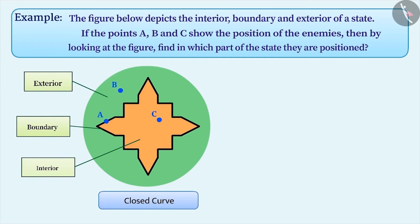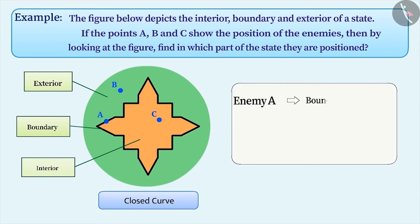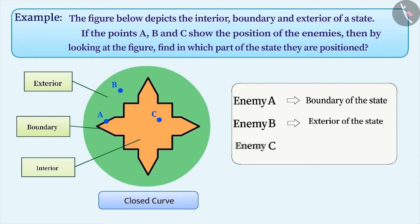Therefore, we can say that enemy A is situated on the boundary, enemy B is at the exterior, and enemy C is inside the state.